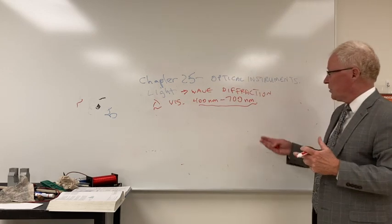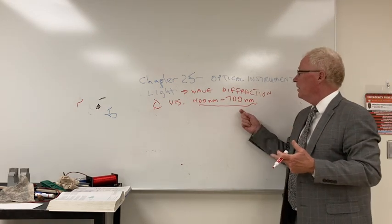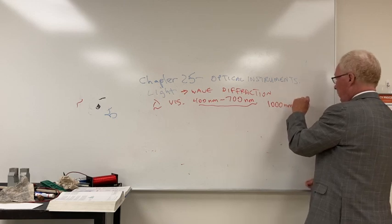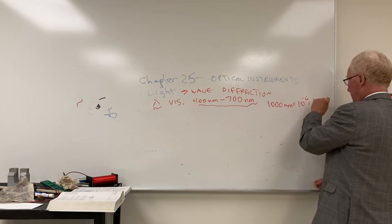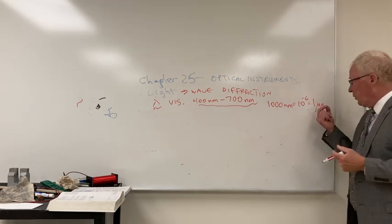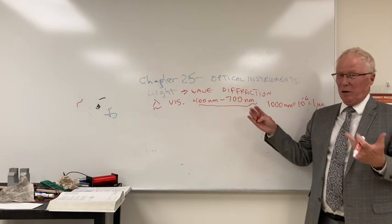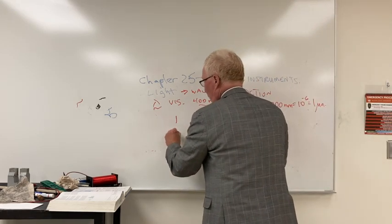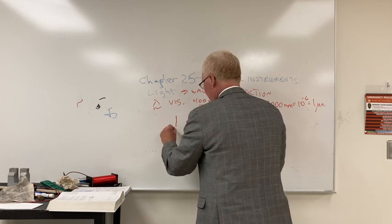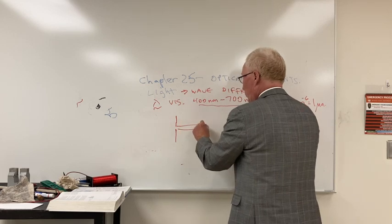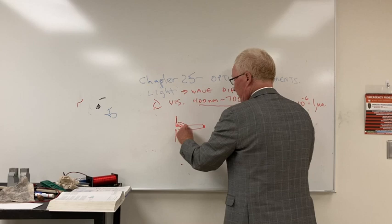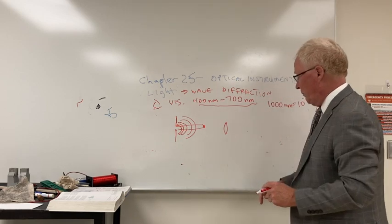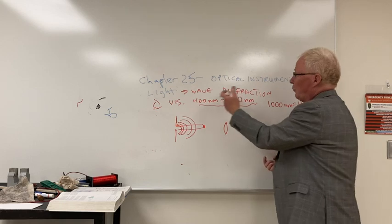This range represents the smallest object you could possibly see with visible light. 1,000 nanometers is 1 micron, 10 to the minus 6th. Because of diffraction — which limits what you can see — remember from chapter 24, if we have a thin slit, the light doesn't just pass through and form a shadow; it spreads out because of diffraction.